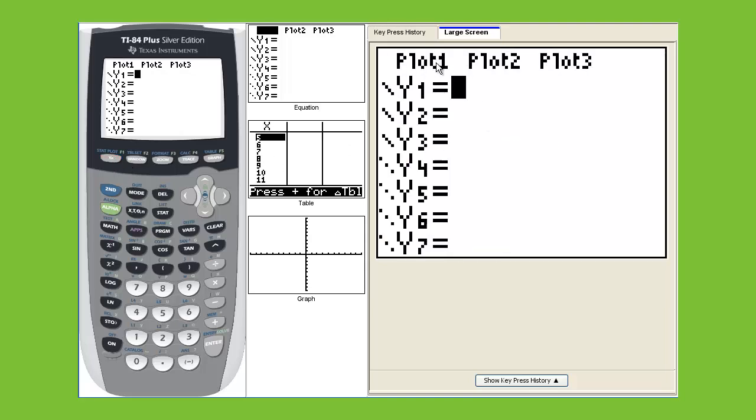If you get your Y equals, plot 1 is not highlighted. We need to go up here and highlight, hit enter on plot 1. Now it will be on. We will never use plot 2 and plot 3, so never have those on.